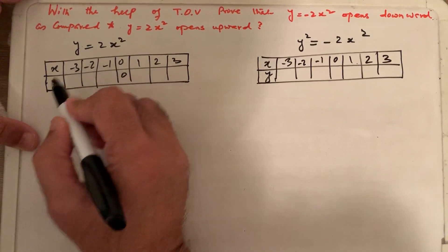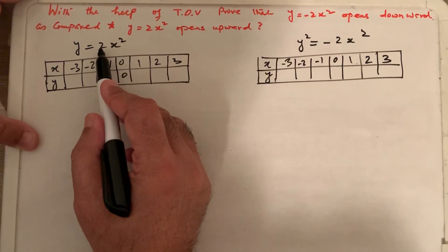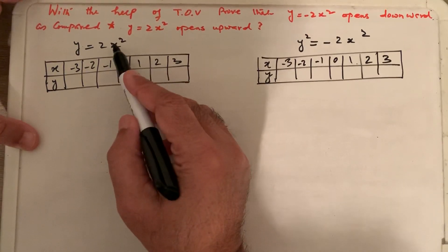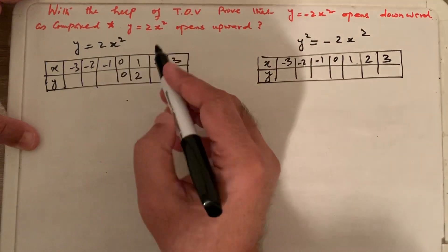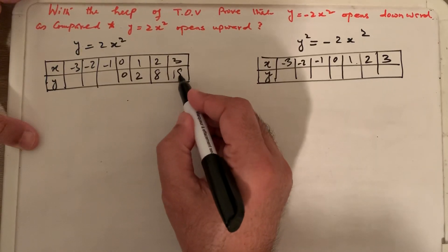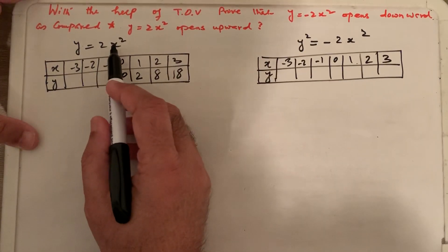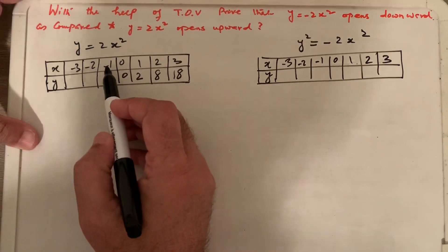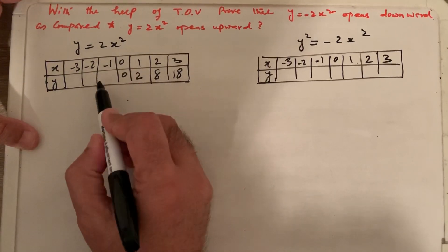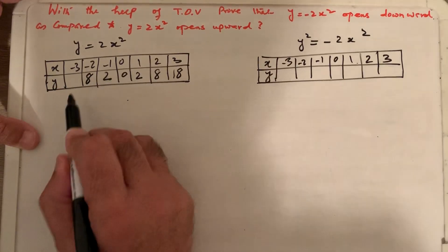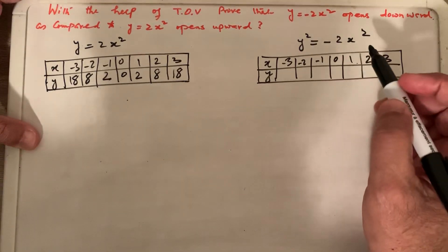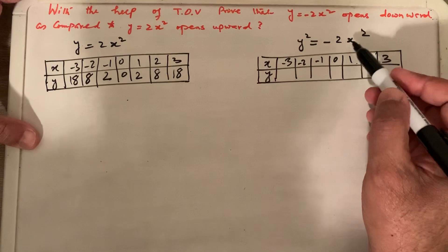For y equals 2x squared: when x equals 1, 1 squared is 1 times 2 equals 2. When x equals 2, 2 squared is 4 times 2 equals 8. When x equals 3, 3 squared is 9 times 2 equals 18. For negative x values, because x is squared, negative times negative is positive, so we get the same results: 2, 8, and 18.